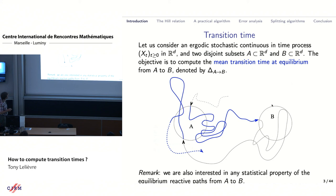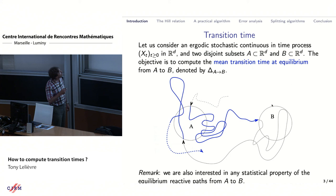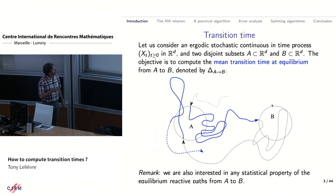Let me start by setting up the problem. You have a stochastic continuous-in-time process x_t which lives in R^d. This is a picture in dimension 2, where the process wanders around in this plane. You assume that it is ergodic, and you have two subsets which have non-zero probability measure with respect to the equilibrium measure.